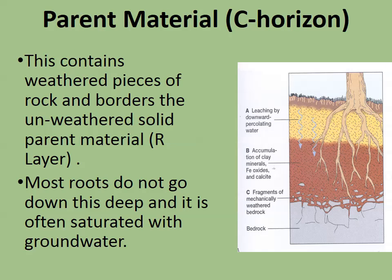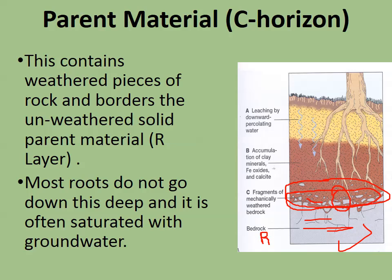The C horizon is your parent material — the interface where bedrock is breaking up through chemical or physical weathering, creating a rocky area. Beneath that is the bedrock, where roots generally won't go. This area is often saturated with groundwater, and the bedrock itself can be saturated with groundwater. The bedrock layer is sometimes known as the R layer.